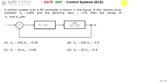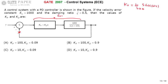We will proceed as follows. First, the velocity error constant KV can be calculated using the formula: KV equals the limit as S tends to 0 of S into G(S)H(S). G(S)H(S) is the open loop transfer function when the feedback is broken. H(S) is 1, and G(S) is the product of the two blocks. So we can write it as the limit as S tends to 0 of S into G(S).